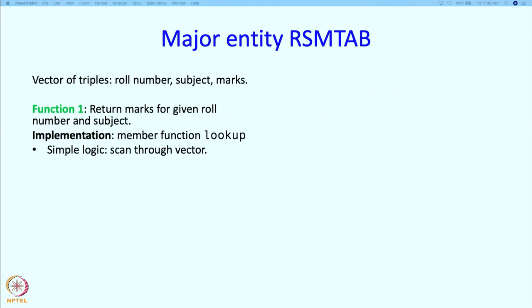The logic of this is fairly straightforward. We are going to scan through the vector and look for an entry where the role number in the entry is the same as the role number in the command, and the subject in the entry is also the same as the subject in the command. If we have a match, we just report the marks.